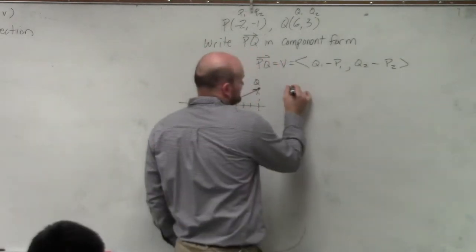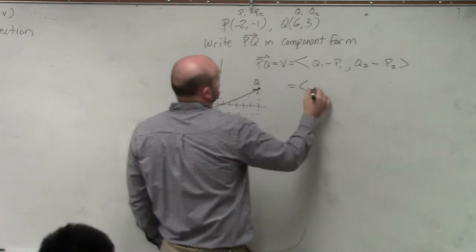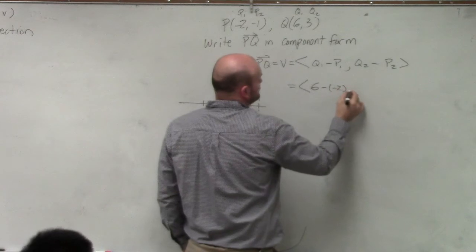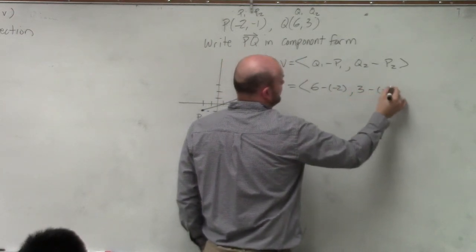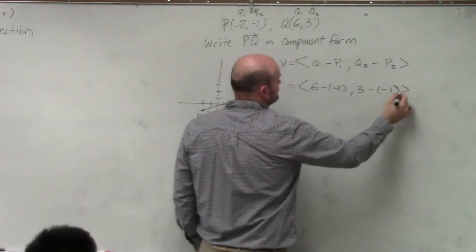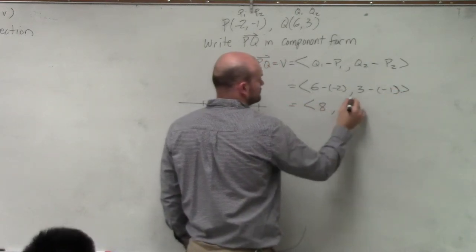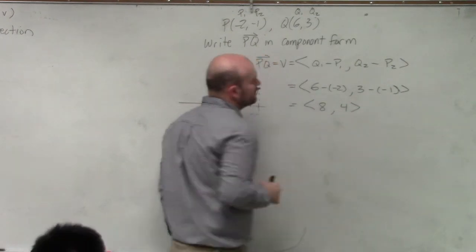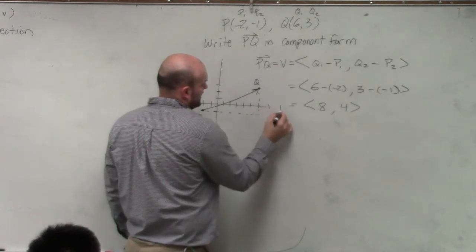So I'm going to call this vector—instead of calling it vector PQ, I'm just going to call it V. So therefore, I have 6 minus negative 2, comma 3 minus negative 1. So 1, 2, 3, 4, 5, 6, 7, 8.